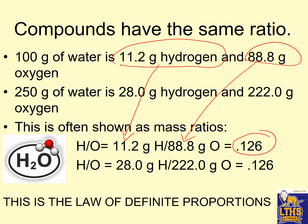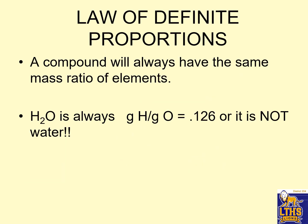What about the 250-gram water sample? We had 28 grams of hydrogen and 222 grams of oxygen, and we get the same mass ratio. Why? Because that's what makes water water. This is called the law of definite proportions — if two compounds are identical, they'll have the same mass ratio. A compound will always have the same mass ratio of elements. Water, H2O, always has a H-to-O ratio of 0.126. If it's not 0.126 grams of H to grams of O, it's not water.